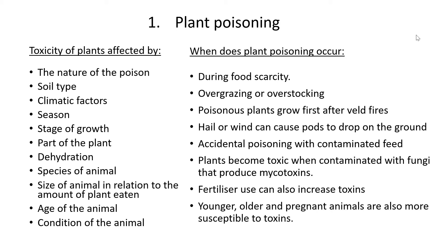Climatic factors like hail and wind can cause pods of poisonous plants to drop on the ground, and even though the animals are just trying to graze on grass, they ingest the pods in between. Also accidental poisoning by contaminated food. Plants become toxic when contaminated with certain fungi, and it's the fungi that produce mycotoxins. Fertilizer use can also increase toxins. Younger, older, and pregnant animals are usually much more susceptible.